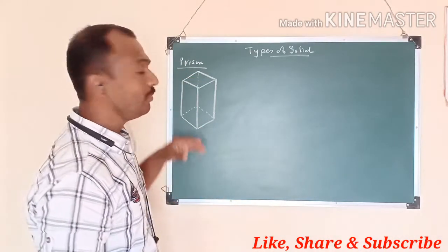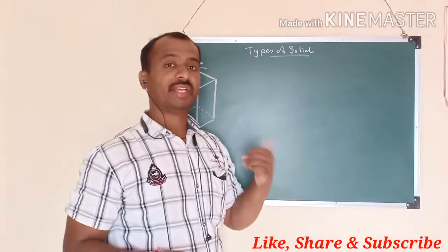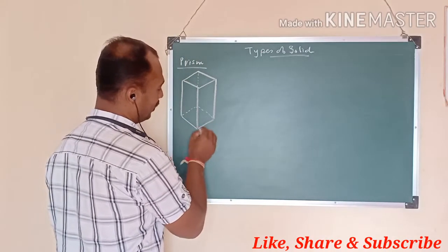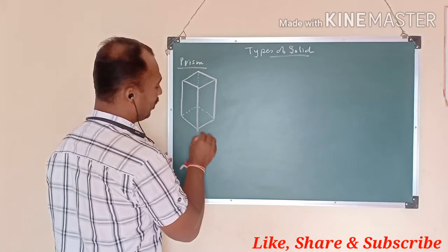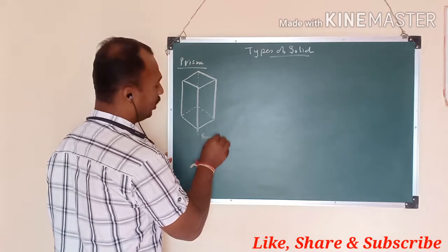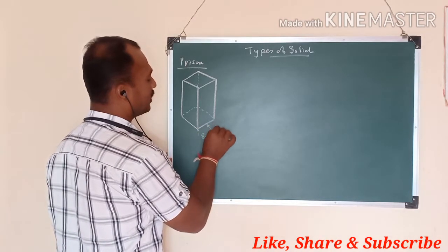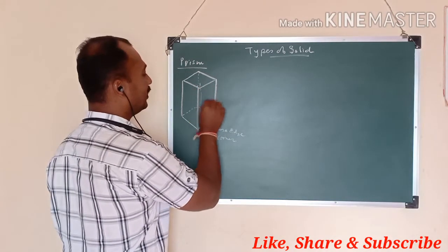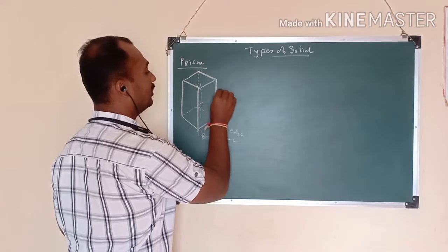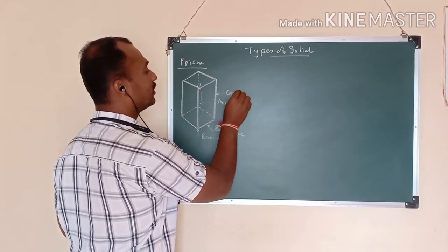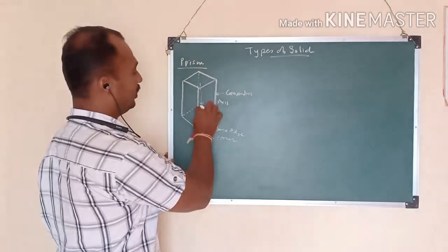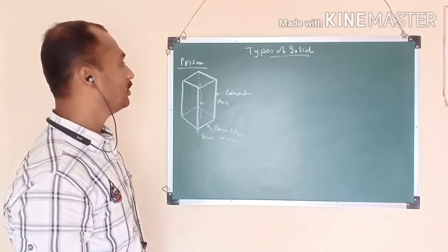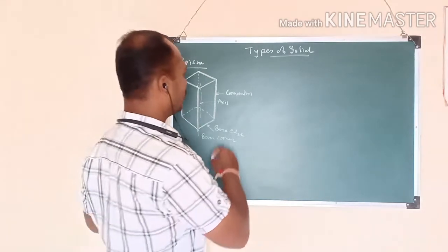If it's a pentagon prism, its top face and base will be pentagon. Hexagon prism — its base and top face will be hexagon. The different terms include: base corner, base edge, axis, and generators. The top face, base, and generators are the different terms in the prism.